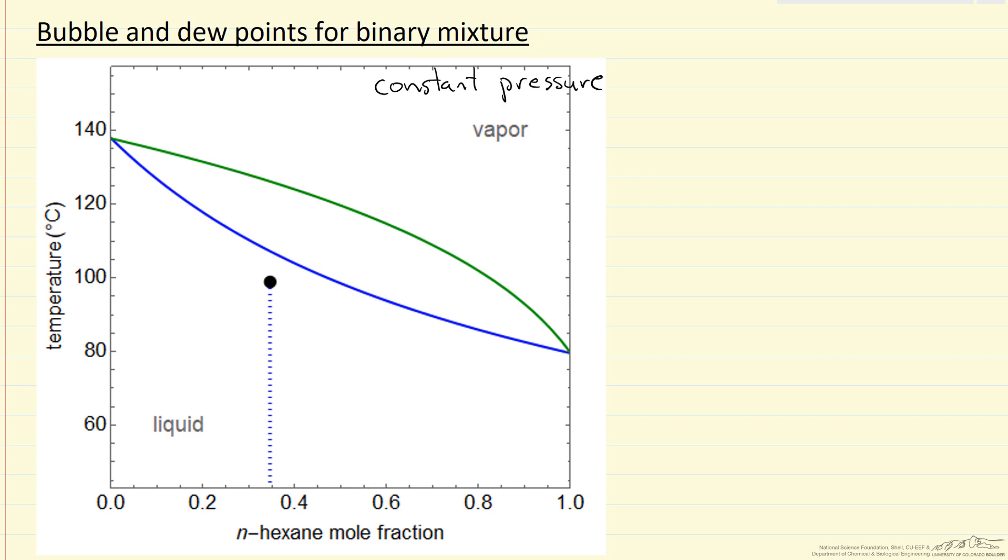Now as we raise the temperature, we'll hit this blue line. That's where the first bubble of vapor appears. So this is the bubble line, bubble point. And for this particular composition, this then would be the bubble temperature.